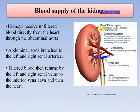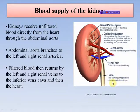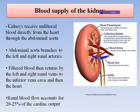Filtered blood returns via the left and right renal veins to the inferior vena cava and then to the heart. The renal parenchyma filters blood and makes urine. Urine produced by the parenchyma is transferred through a tunnel-like area into the ureter. Renal blood flow accounts for 20–25% of the cardiac output, meaning only 20–25% of the blood is purified in the kidney.